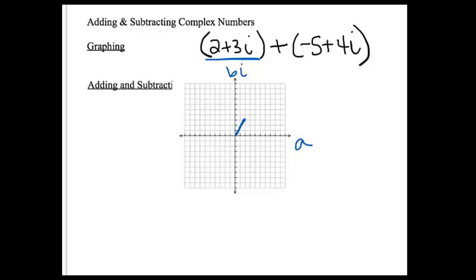If I were to graph negative 5 plus 4i, I would go left 5 and up 4. Since I'm adding it to 2 plus 3i, I'm going to go to the left 5 from there and up 4. So that's me adding negative 5 plus 4i to 2 plus 3i.